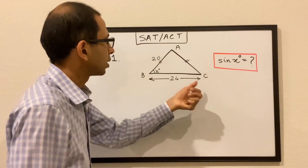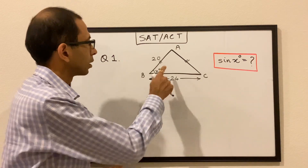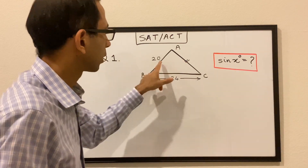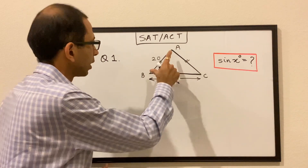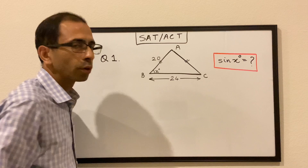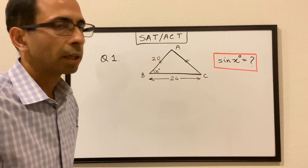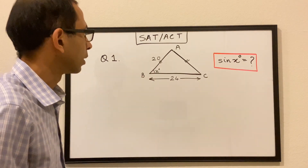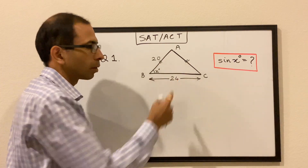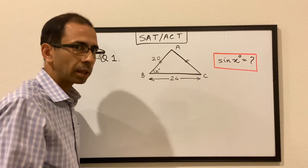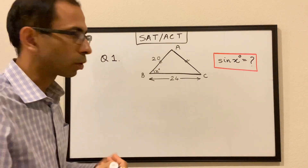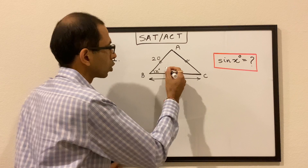We have a triangle ABC such that these two sides are equal — this symbol shows those two sides are equal. The length of side AB is 20, the length of side BC is 24, and we have to find sine of x, the sine of this angle. Since these two sides are equal, it's an isosceles triangle. In an isosceles triangle, the opposite sides are equal and the opposite angles are also equal, so this angle will also be x degrees.